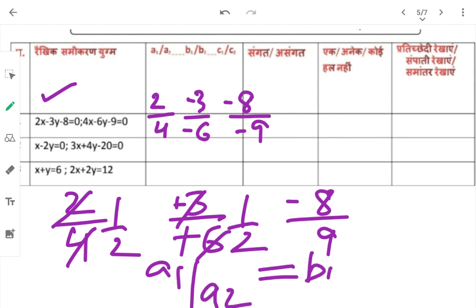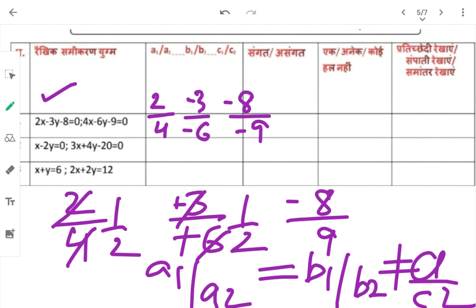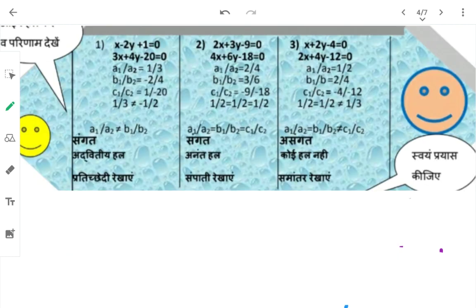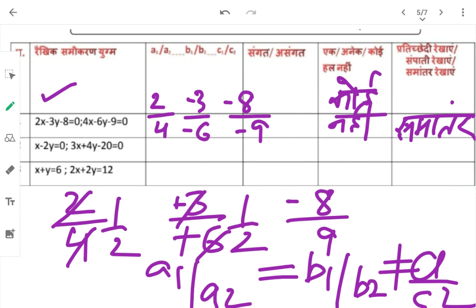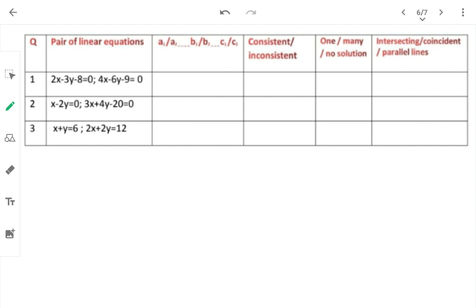A1/A2 = B1/B2 equal है, लेकिन C1/C2 के equal नहीं — तो समानांतर रेखाएं हैं, parallel lines। कोई हल नहीं है। यह inconsistent है — असंगत।